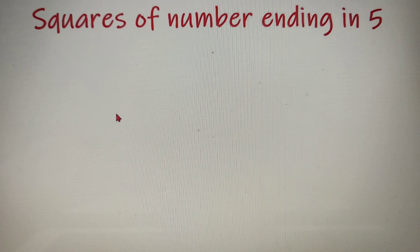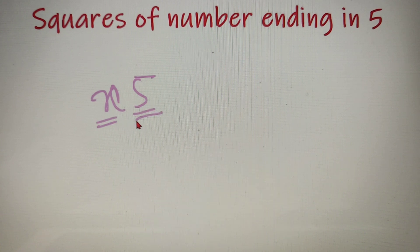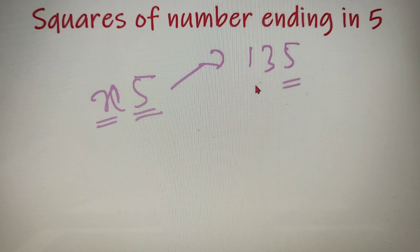Now the method for finding out the squares of a number ending in 5 is as follows. Suppose you are given a number, let's say x5, where 5 is the last digit of the number and x is all the digits occurring before the digit 5. So suppose we are given a number, let's say 135, then 5 is the unit digit and x is equal to 13 because it is occurring before the digit 5.